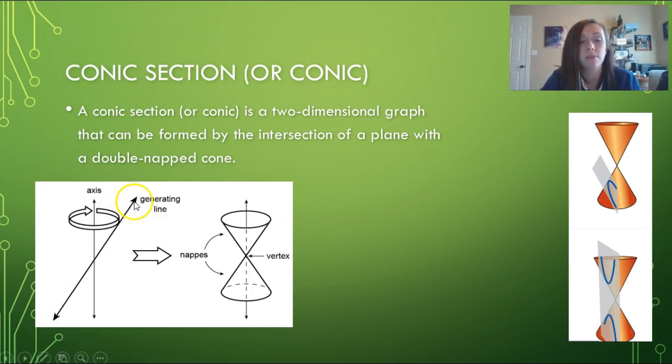When that generating line remains connected at this axis and it rotates around the axis so that the top portion goes around the top and the bottom portion makes a circle around the bottom, you end up with a double-napped cone.